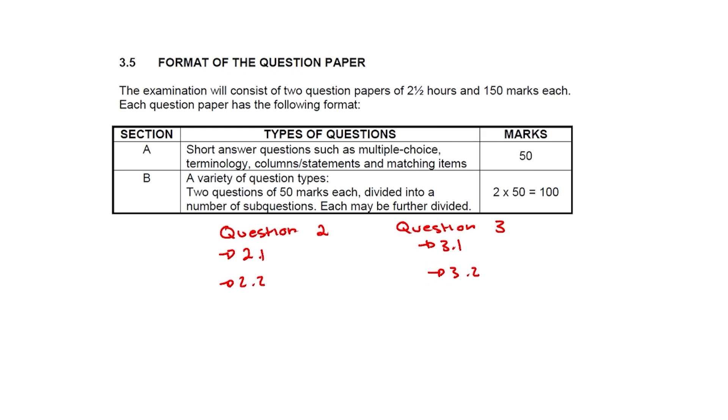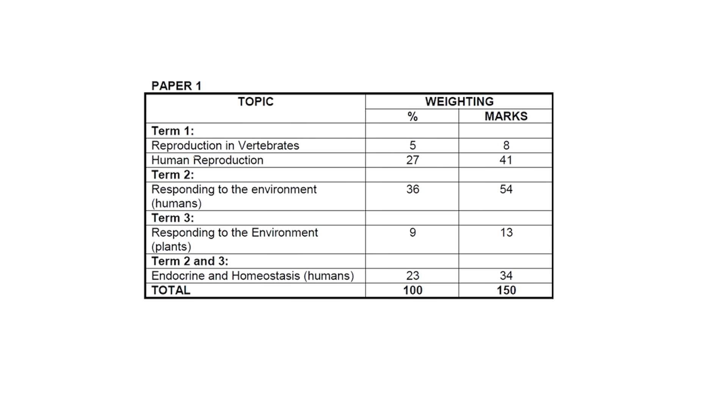Now let's look at the topics. The topics in Paper 1 include reproduction of vertebrates, which is animal reproduction, human reproduction, responding to the environment in humans and plants, and then endocrine system and homeostasis, each with an estimated amount of marks and weighting.